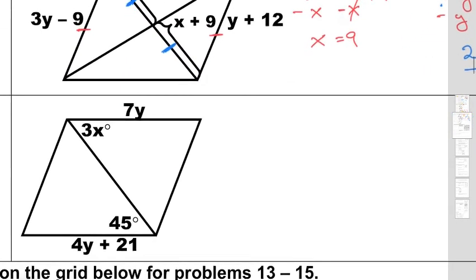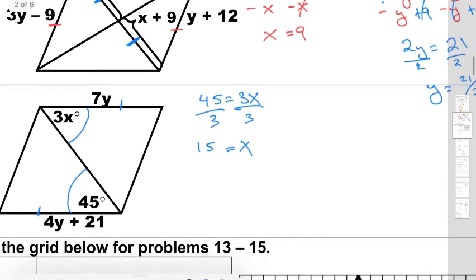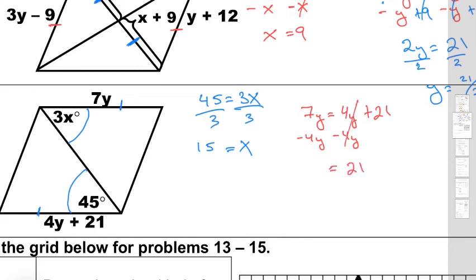Let's finish up with question number 12. What properties need to happen in order for it to be a parallelogram? We have alternate interior angles, and they should be congruent. So we set up 45 equals 3x; divide both sides by 3, and we get an x value of 15. For y, these two sides are supposed to be congruent, so we set up 7y equals 4y plus 21. Subtracting 4y from both sides gives 3y equals 21; divide both sides by 3, and we get a y value of 7.